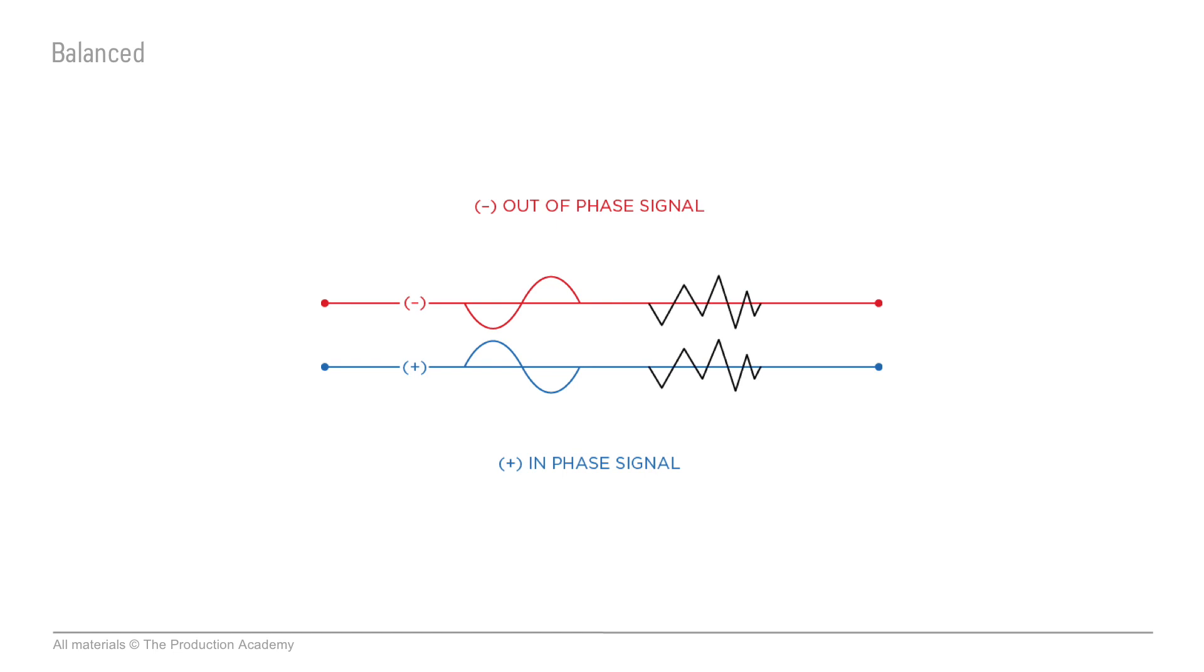You can think of noise as a wave trying to get into the cable. And if it gets into the signal wires, we'll have the same noise in both of our cables and it will be in phase.